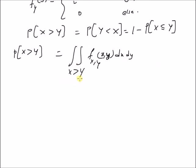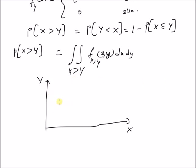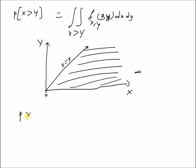We can find the limits for this integration by looking at the XY plane — the x-axis and the y-axis. Since the PDFs are defined only for positive values of x and y, we are only concerned with the first quadrant. Considering the line x equal to y, the integration area for x greater than y is given by that region, where the x limits are from 0 to infinity and the y limits are from 0 to x.